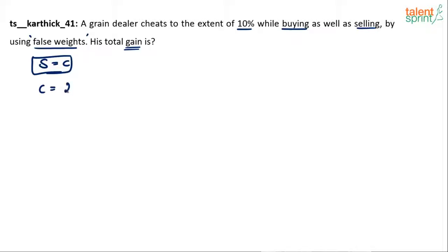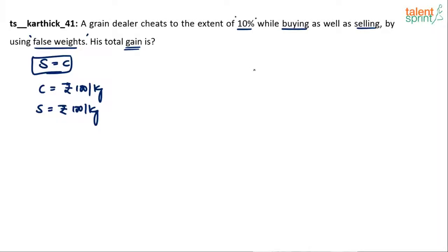For example, assume that cost price is rupees 100 per kg. The selling price is also going to be rupees 100 per kg. The question would be: how would he make a profit if both selling price and cost price are the same? The profit would be made in terms of quantity. He is cheating to the extent of 10% while selling as well as while buying.